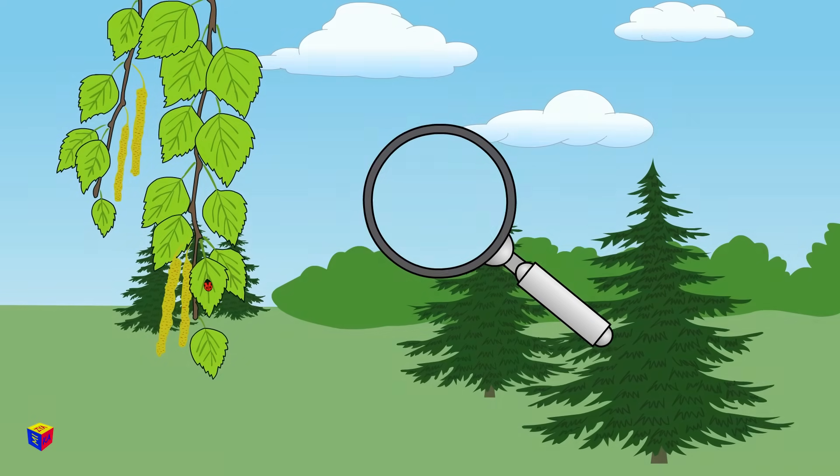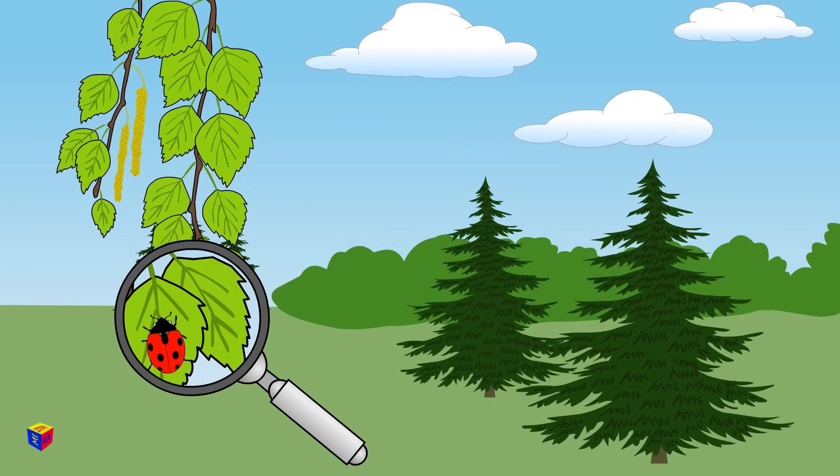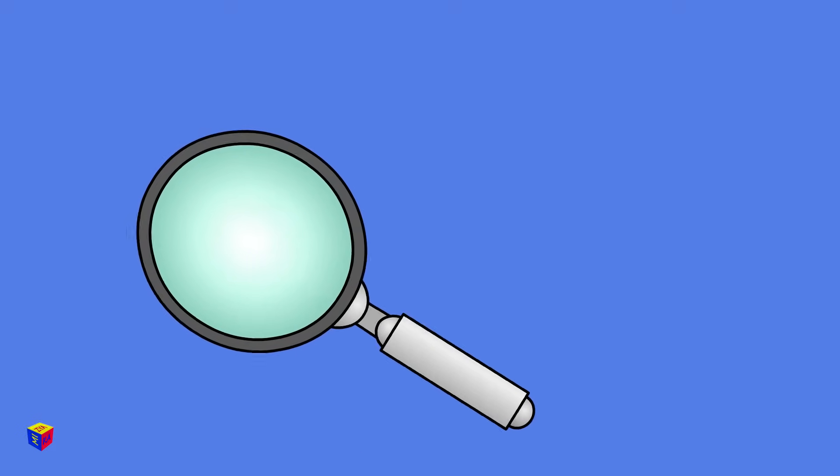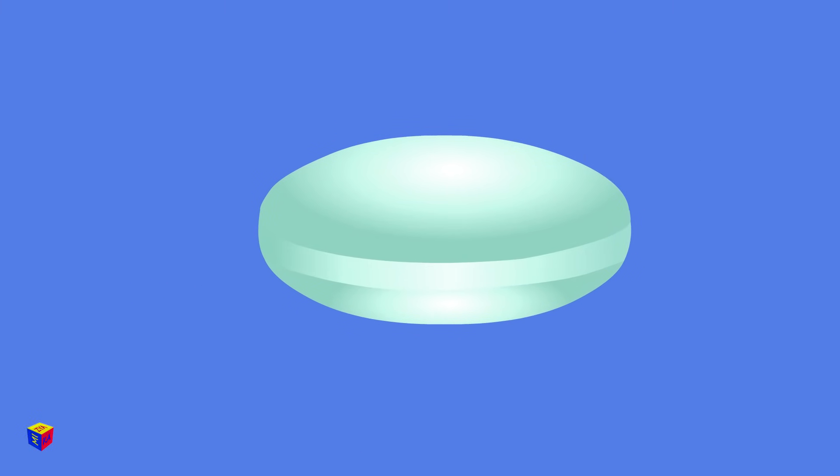If you've ever viewed objects through a magnifying glass, then you already know what a converging lens is. It is a piece of glass with two convex sides, or only one, but the middle part of it is necessarily thicker than the edges.